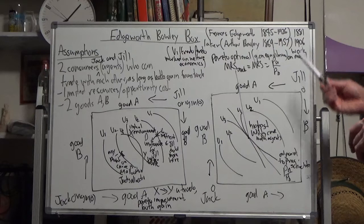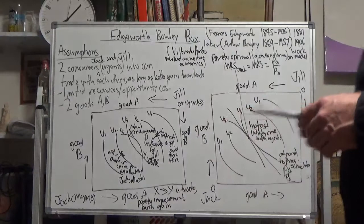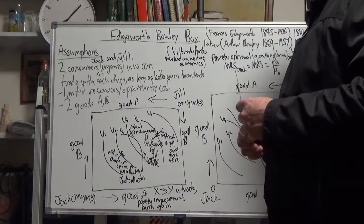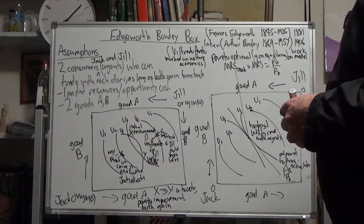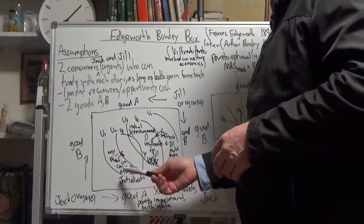So two consumers, Jack and Jill, agents who can trade with each other. As long as both gain from the trade, that's why people trade, they want to gain. That's why countries trade, they want to gain according to comparative advantage. Gain from the trade. We're still stuck with limited resources and opportunity cost between the two goods.